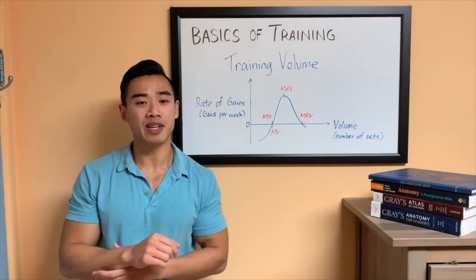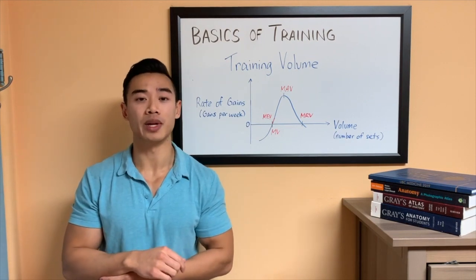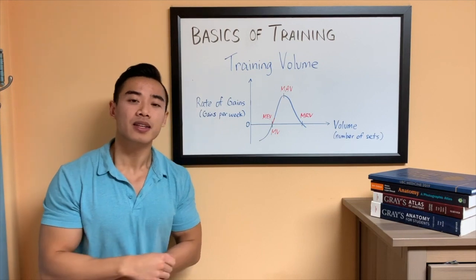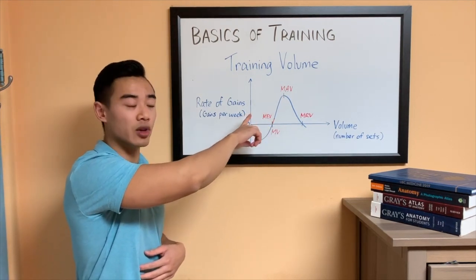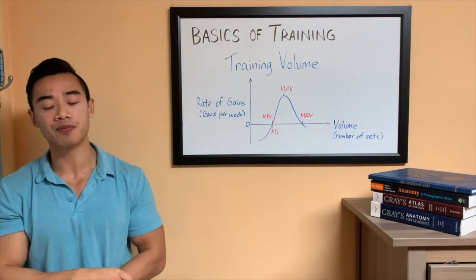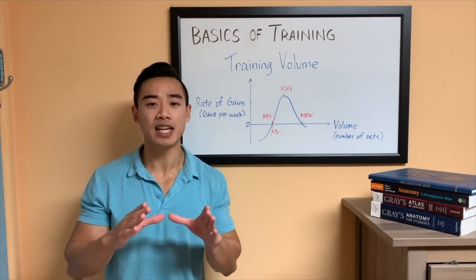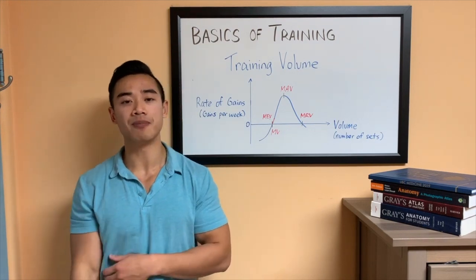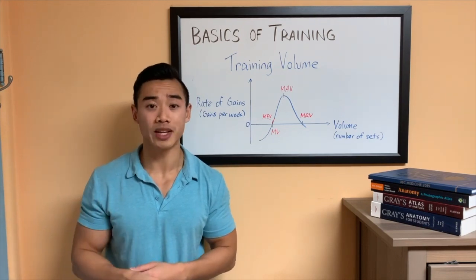Now, in my first video, I made a recommendation of about 10 to 20 sets per body part per week. Now that we have these concepts in mind, I'll say that that 10 is around minimum effective volume, and the 20 sets is around maximum recoverable volume. So for a beginner, I probably recommend starting at about 10 sets per muscle group per week. So for quads, that might work out to doing three sets of squats three times per week.